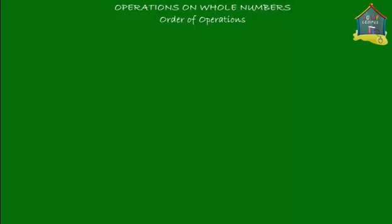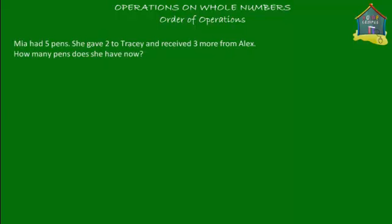Let's get started with a fairly simple word problem. Mia had five pens. She gave two to Tracy and received three more from Alex. How many pens does she have now? The number statement for this would be: she had five pens, so we write five. She gave two to Tracy, so we have five minus two. And she got three more from Alex, so we add three. The number statement is five minus two plus three.